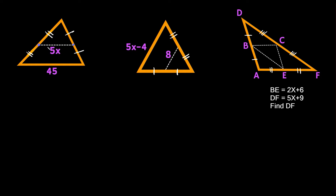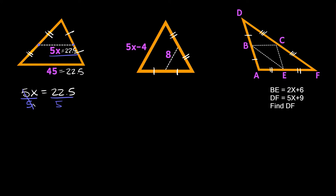So how do we solve for X here? The mid-segment is 5X, and the long side it's parallel to is 45. We know the mid-segment should be half of 45, which is 22.5. So we set up 5X equals 22.5, divide both sides by 5, and we get X equals 4.5.